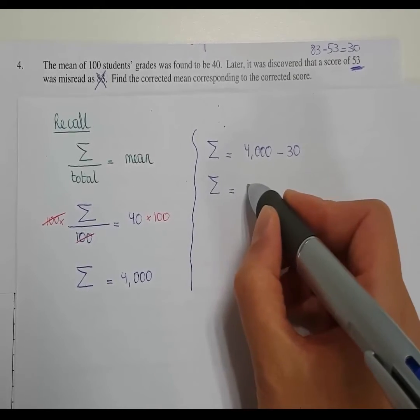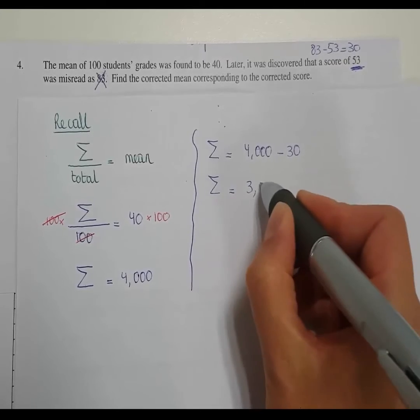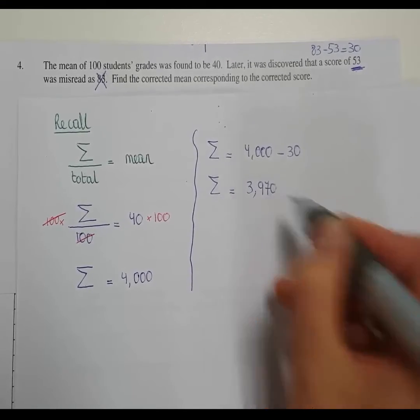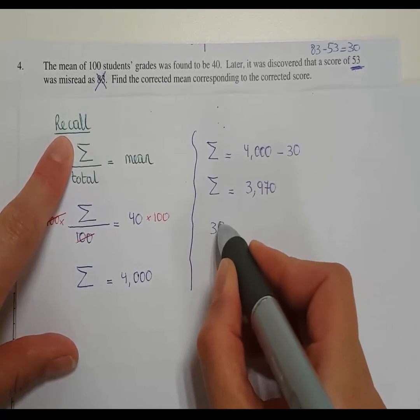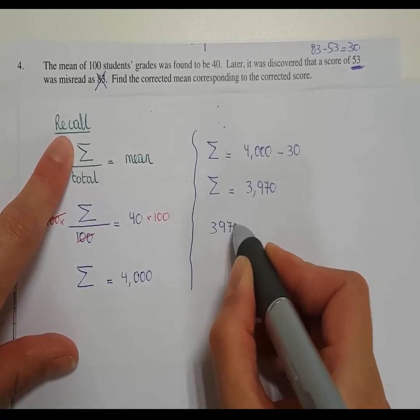The actual sum of all the scores should have been 3,970. All right, let's find the mean again. The actual sum, 3,970.